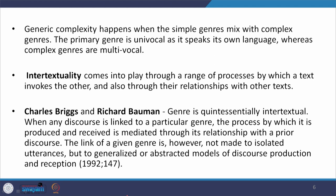Genre complexity happens when the simple genres mix with complex genres. The primary genre is univocal because it speaks its own language. On the other hand, complex genres are usually multivocal. Intertextuality comes into play through a range of processes through which a text invokes the other and through their relationships with other texts. Critics like Charles Briggs and Richard Bauman would note that genre is quintessentially intertextual. When any discourse is linked to a particular genre, the process by which it is produced and received is mediated through its relationship with a prior discourse. The link is made not to isolated utterances but to generalized or abstracted models of discourse production and reception.